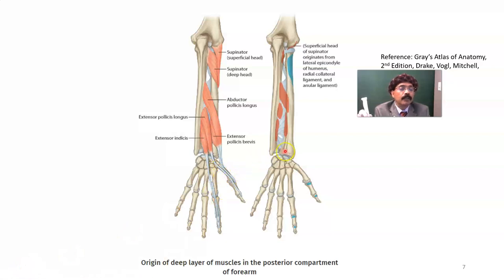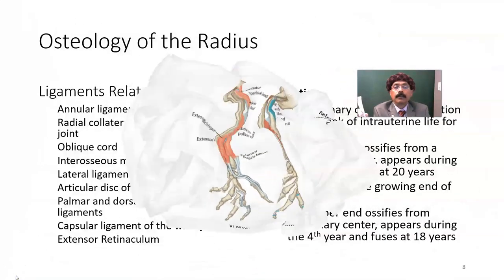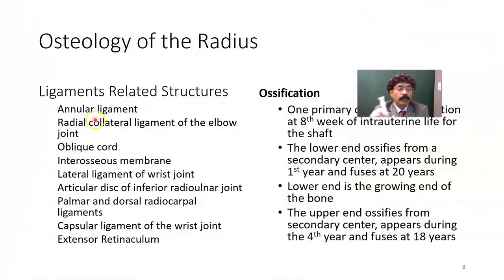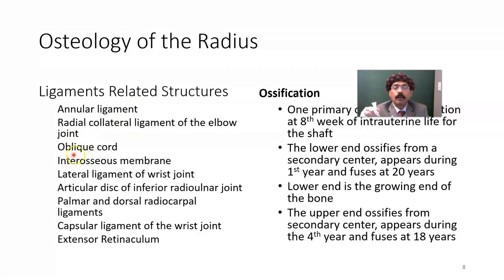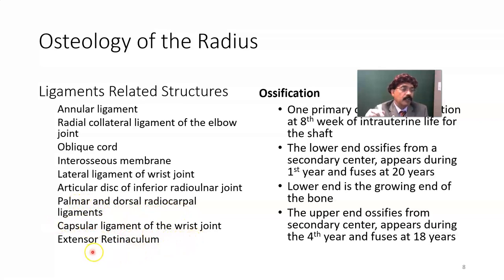Ligaments associated with the radius include: the annular ligament, radial collateral ligament of the elbow joint, radial collateral ligament of the wrist joint, oblique cord, interosseous membrane, lateral ligament of the wrist joint, and articular disc of the inferior radioulnar joint. Also the palmar and dorsal radiocarpal ligaments, capsule of the wrist joint, and the extensor retinaculum, which keeps the tendons on the dorsum of the hand and is attached to both the radius and ulna.